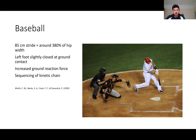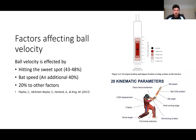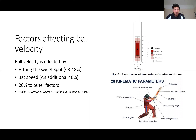Moving on to cricket — hitting the sweet spot is the middle of the bat and was found to be a really important factor in hitting the ball hard. How do we coach that? Professionals seem to hit it more consistently — is that due to repetition, or doing other factors better? There might be a psychological and mental component. Should you be focusing on how far you want to hit the ball, or where you want to hit the ball on the bat? Bat speed accounts for an additional 40%, so up to 80% has been attributed to hitting the sweet spot combined with a fast bat speed.